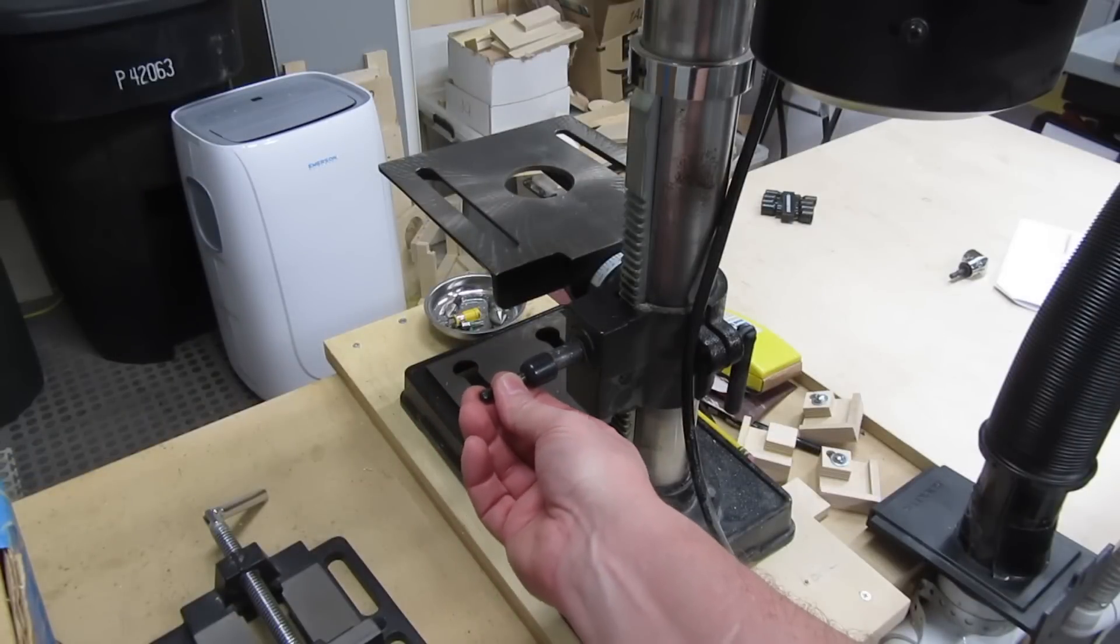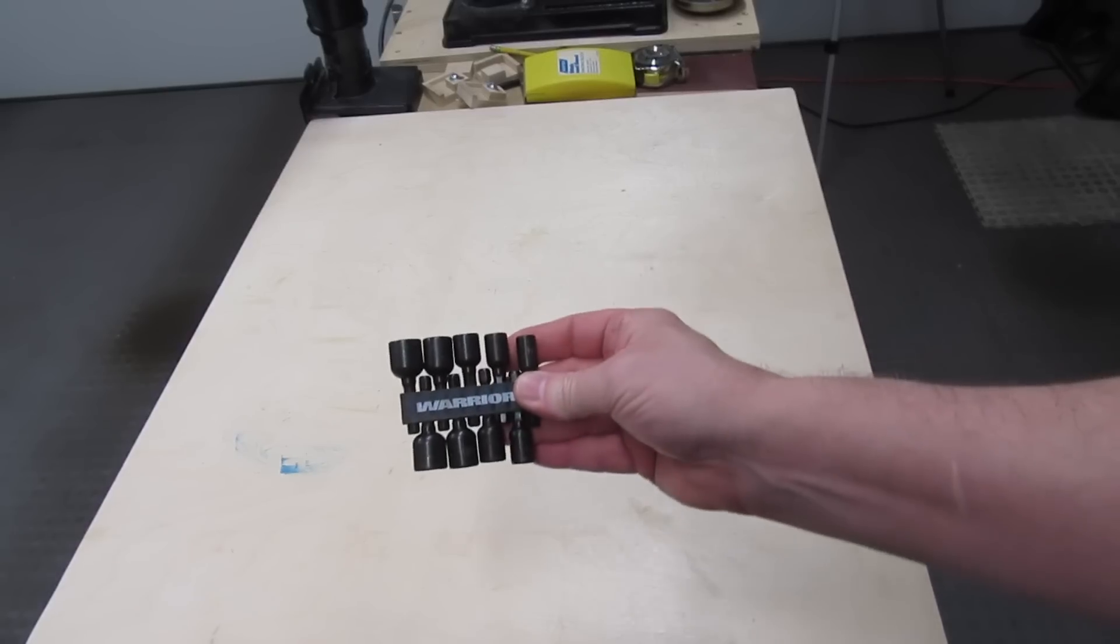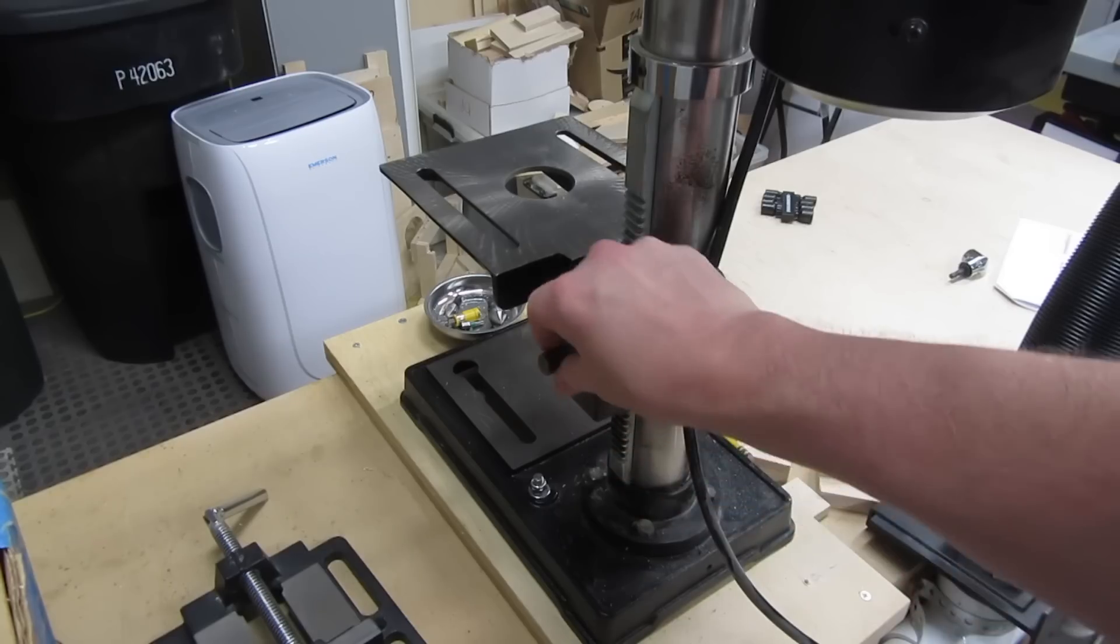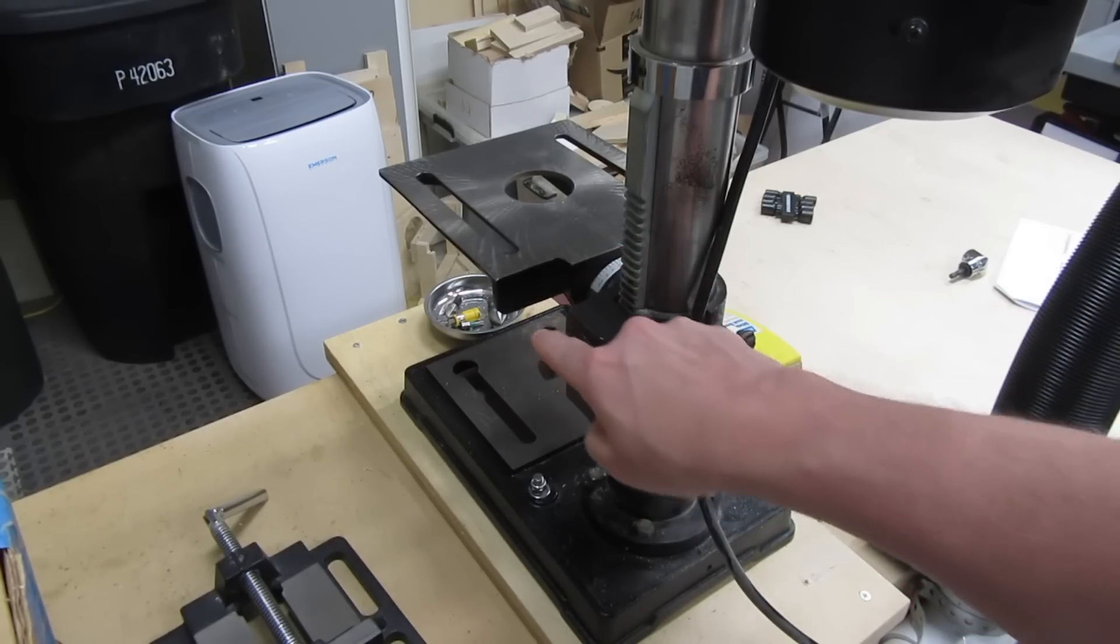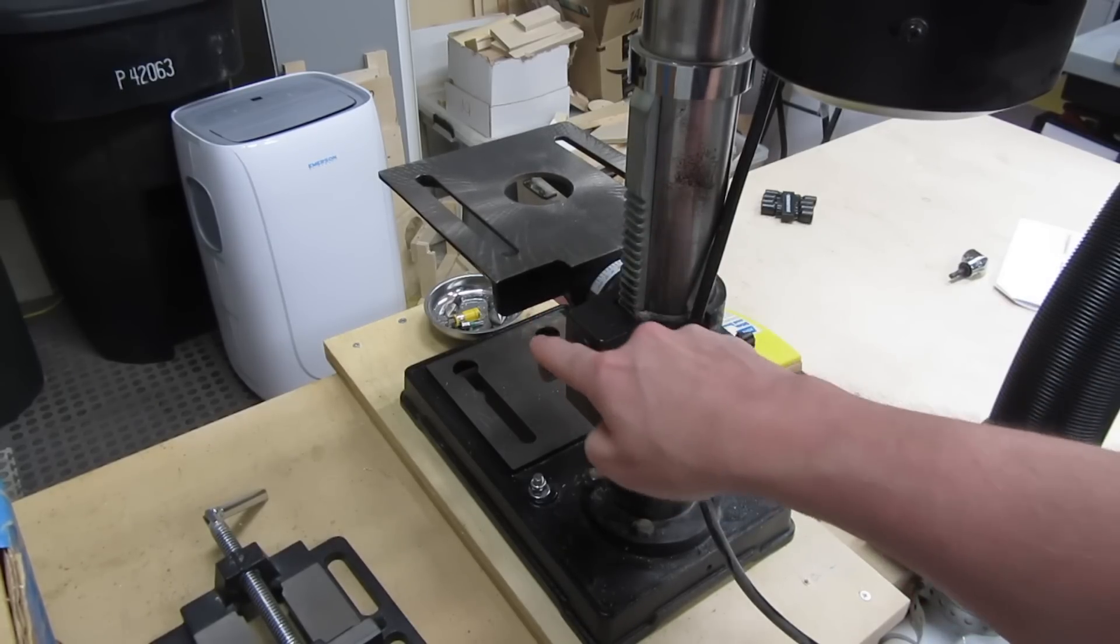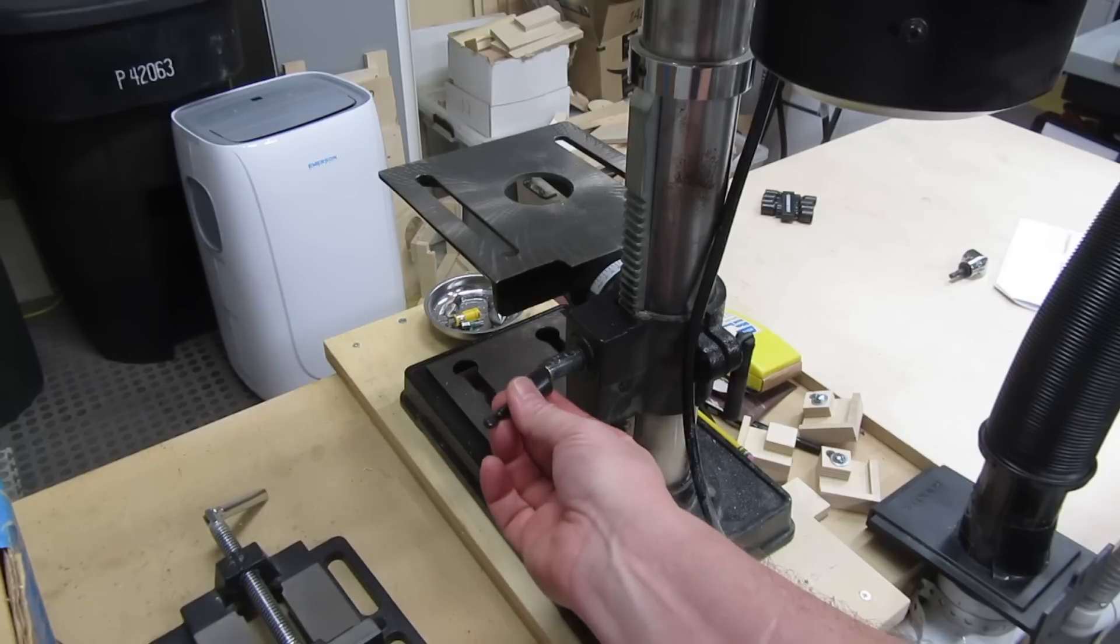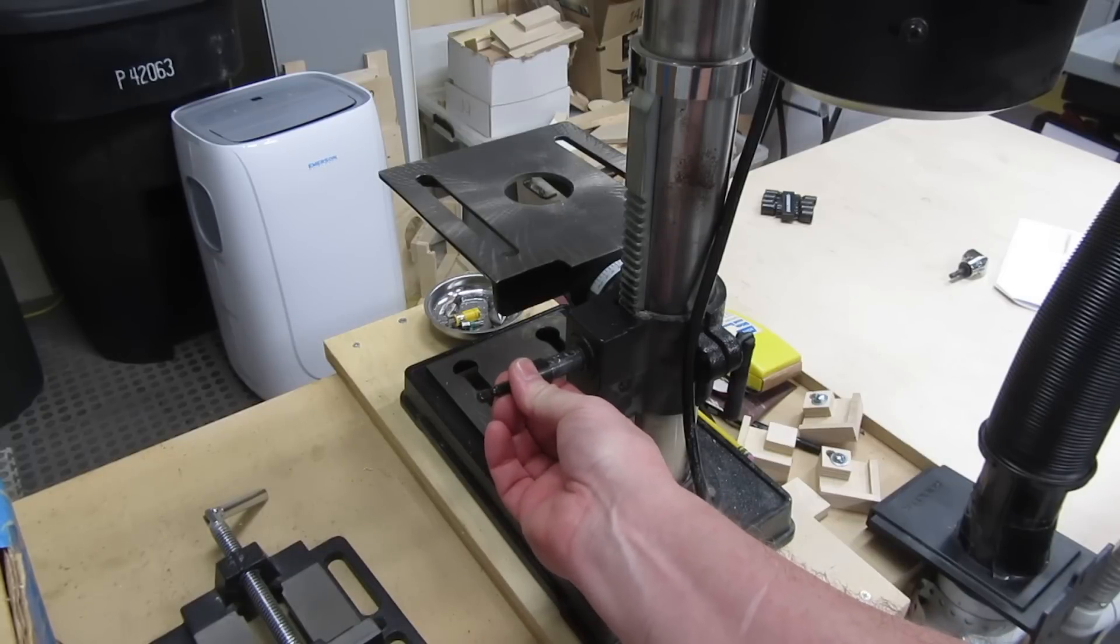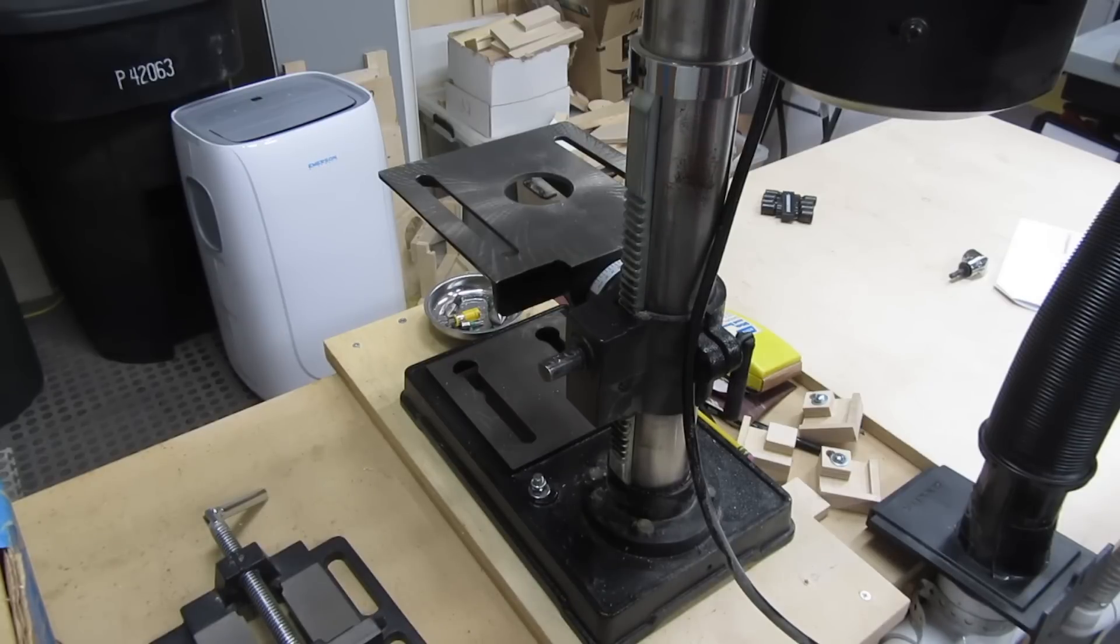One option I considered, and you could certainly try it if you wanted, was to use a hex socket like these cheap ones I got at Harbor Freight. I was thinking I could use an angle grinder to flatten the sides of the crankshaft, turning it into a hex shaft. Then drilling and tapping a hole in the socket for the set screw. But when it got down to it, I was too chicken to try. Still, if you want to try it, it's certainly an option.